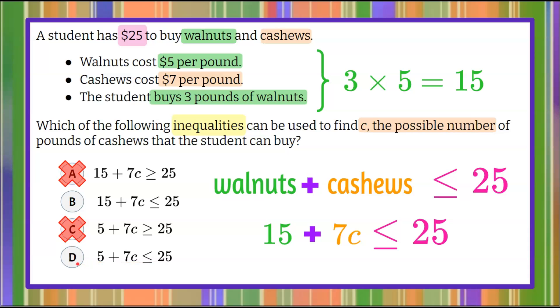Let's consider answer choice D. This says 5 plus 7C. So I can see what mistake they made. They said $5 per pound. But that would mean right here that they bought one pound of walnuts, one pound for $5. But we know that they bought 3 pounds. So we know answer choice D is not correct.